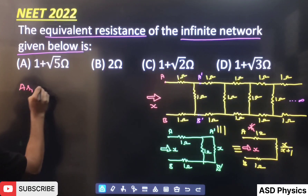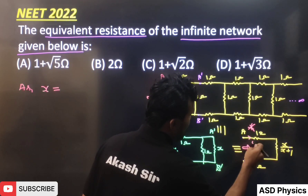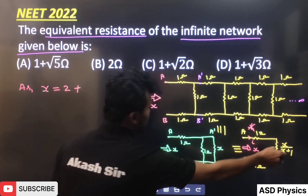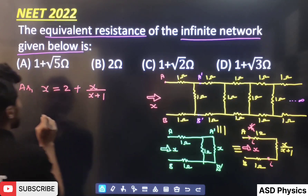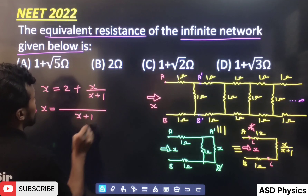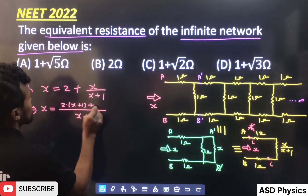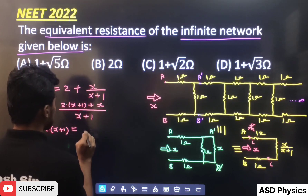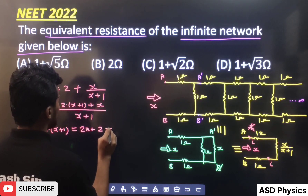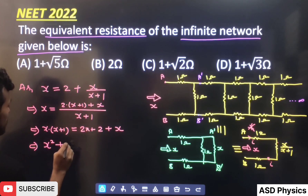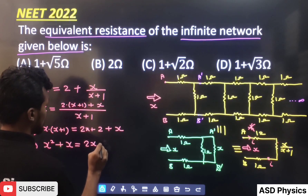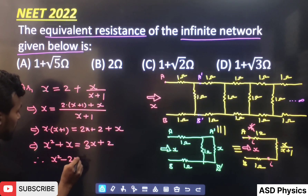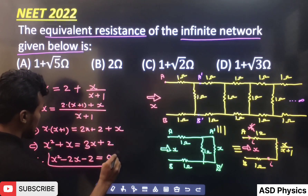From this circuit, we can write X = 1 + 1 + X/(X+1), because the same current flows through all resistors. So 1 ohm and 1 ohm in series gives 2, plus X/(X+1). Simplifying: X(X+1) = 2(X+1) + X, which expands to X² + X = 2X + 2 + X = 3X + 2. Further simplification gives X² - 2X - 2 = 0. This is our standard quadratic equation.